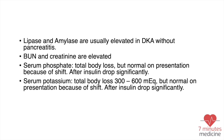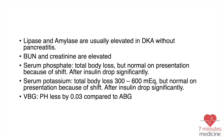Serum phosphate shows total body loss, but on presentation it may be normal; once you start the insulin drip, phosphate will drop, so monitor it closely. Serum potassium also shows total body loss of 300 to 600 milliequivalents, but can be normal or even elevated on presentation due to shifting from acidosis. After starting the insulin drip it will drop significantly, so keep a close eye on potassium throughout the DKA and HHS protocol.